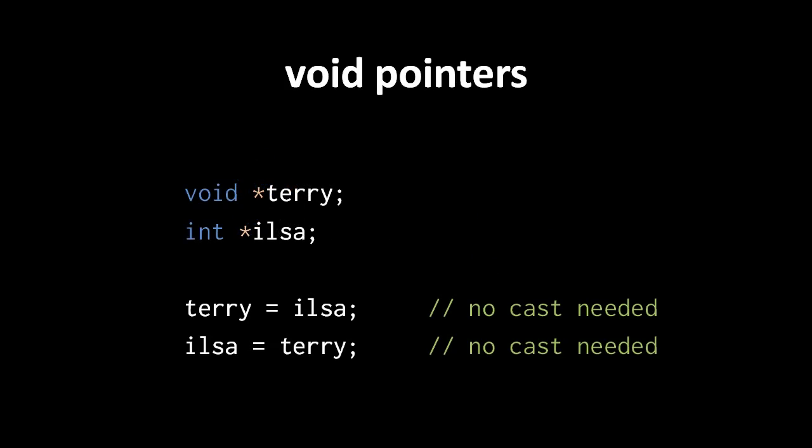Void, as we briefly mentioned earlier, is a special type that represents nothing. A void pointer is a generic pointer type that can substitute for any other kind of pointer without casting. Here we have a void pointer variable terry and an int pointer variable ilsa. When we assign ilsa to terry, or terry to ilsa, we can do so without casting.